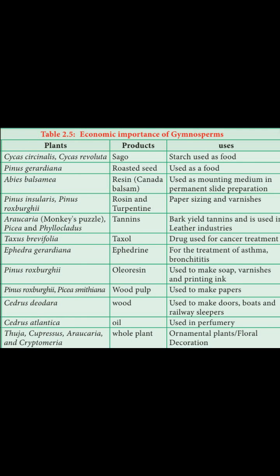Araucaria and Phyllocladus are sources of tannins. Tannins are used in the leather industry — they help in converting animal skin into leather. This is an important commercial use of certain gymnosperm species.